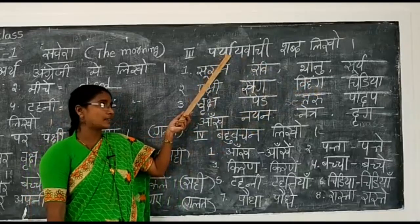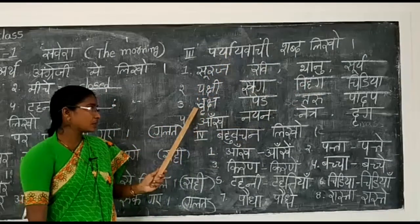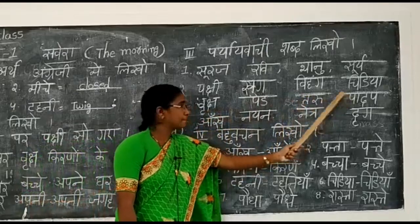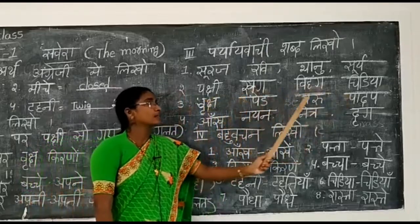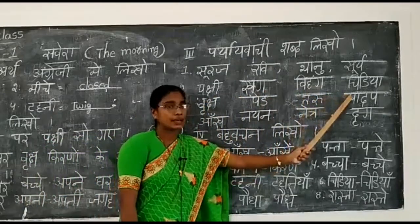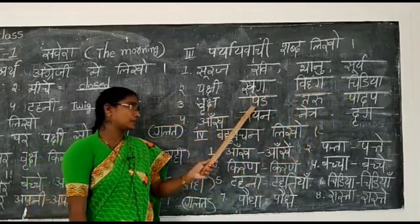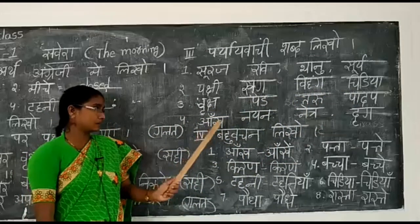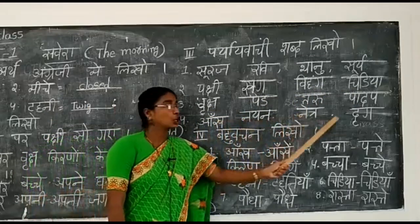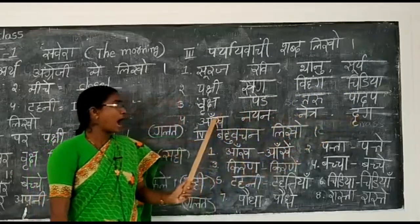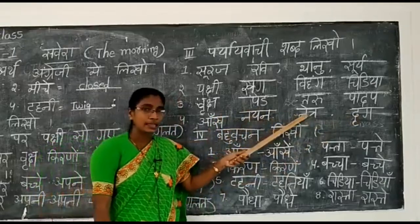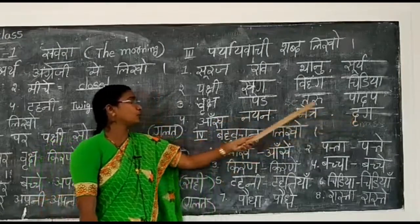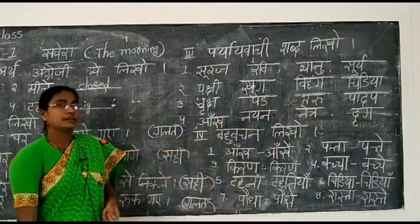Third word: 'Ruksh'. Its synonyms are 'Ped', 'Taru', 'Padap'. All mean tree. Next, fourth word: 'Ankh'. Its synonyms are 'Nayan', 'Netr', 'Drugg'. All four words - ankh, nayan, netr, drugg - have the same meaning: eye.